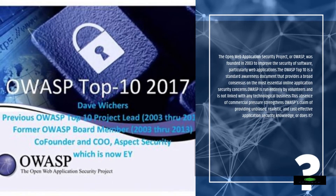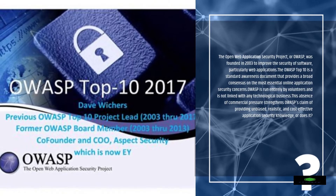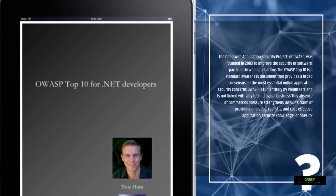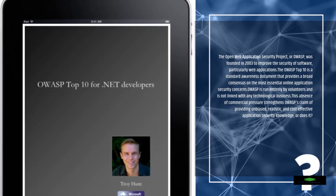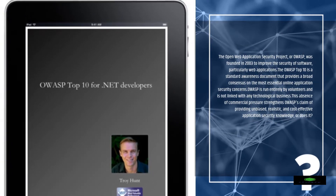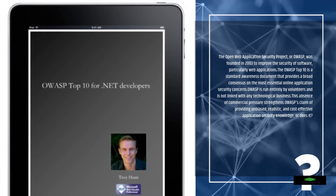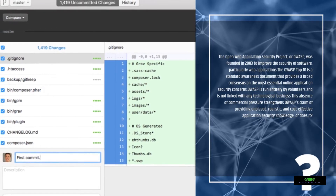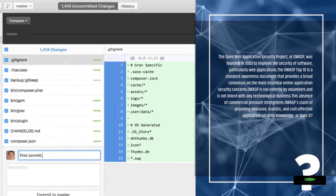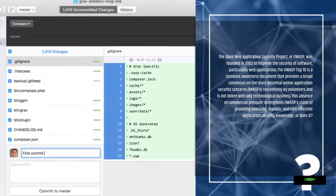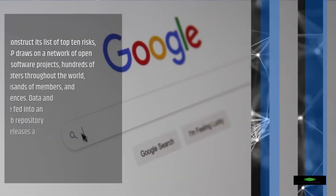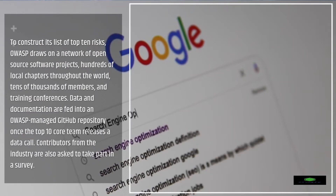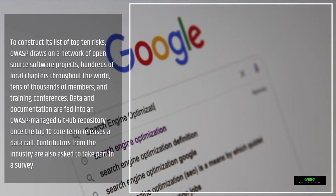The Open Web Application Security Project, or OWASP, was founded in 2003 to improve the security of software, particularly web applications. The OWASP Top 10 is a standard awareness document that provides a broad consensus on the most essential online application security concerns. OWASP is run entirely by volunteers and is not linked with any technological business. This absence of commercial pressure strengthens OWASP's claim of providing unbiased, realistic, and cost-effective application security knowledge.